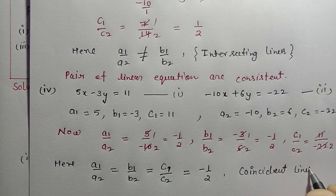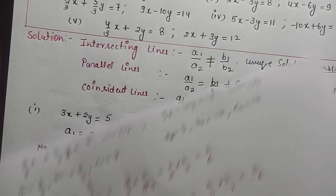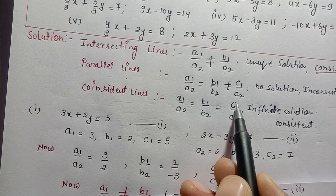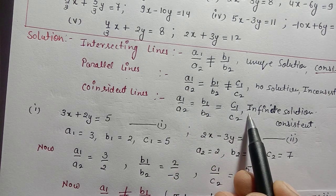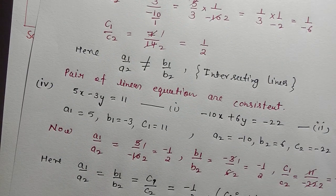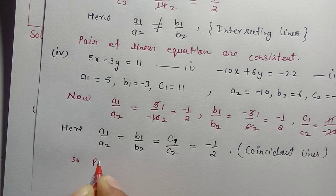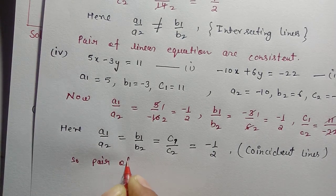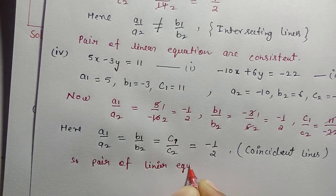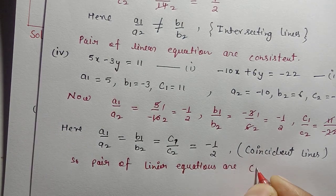These are coincident lines, our third condition. For coincident lines, A1/A2 = B1/B2 = C1/C2, giving infinitely many solutions. So this is a consistent pair of linear equations.